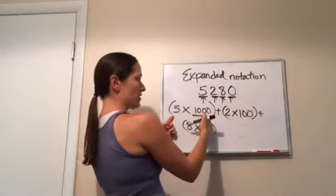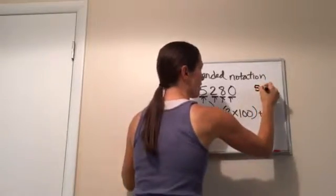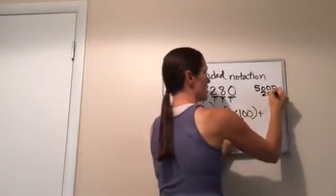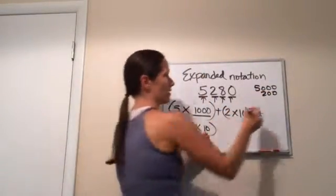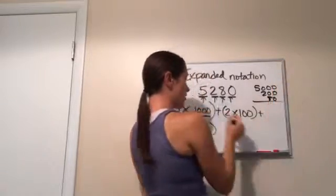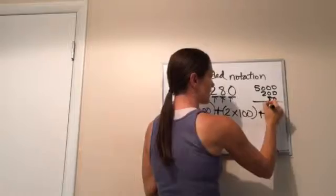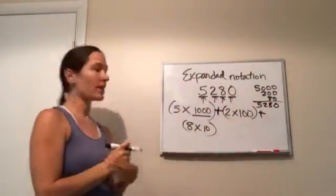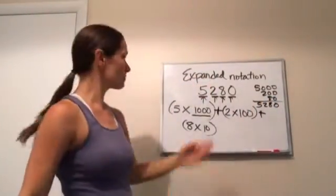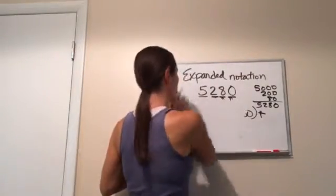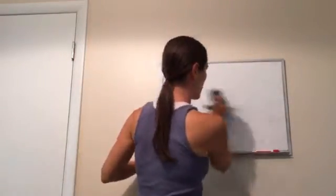What is five times a thousand? Five thousand. What's two times a hundred? Two hundred. What's eight times ten? Eighty. Now if I add all those up, plus, plus, then if I do that I get five thousand two hundred eighty, which is our number. Isn't that pretty simple? All right. Now good job, that was just a quick review on expanded notation.